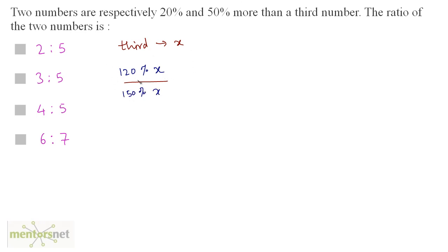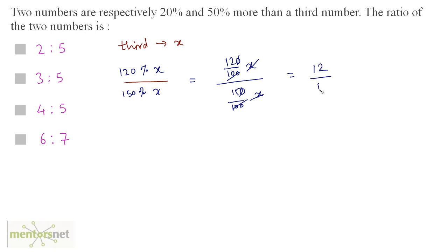We have the ratio (120% of x) divided by (150% of x), which equals (120/100)x divided by (150/100)x. The hundreds and x cancel out, leaving 12 by 15. Three times four is twelve and three times five is fifteen, so we have four by five as the ratio — that is 4:5. Option C is the correct answer.